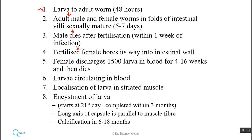The fertilized female goes to the intestinal wall and discharges approximately 1500 larvae over four to sixteen weeks, and then she also dies. These larvae enter into circulation, find their target — striated muscle — localize there, get encysted, and avoid killing by the immune system. This encystment starts on the 21st day and is usually completed within three months. The long axis of the encystment capsule is parallel to the muscle fiber of the host.